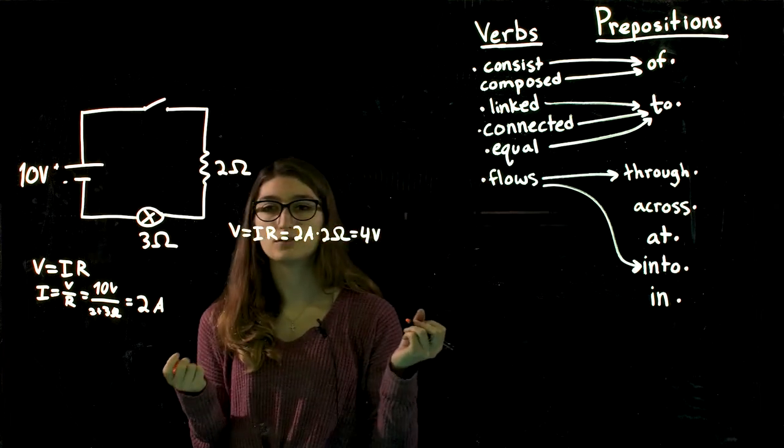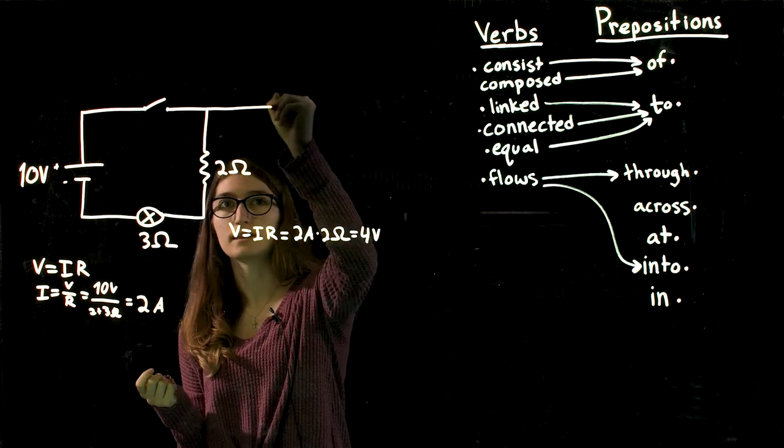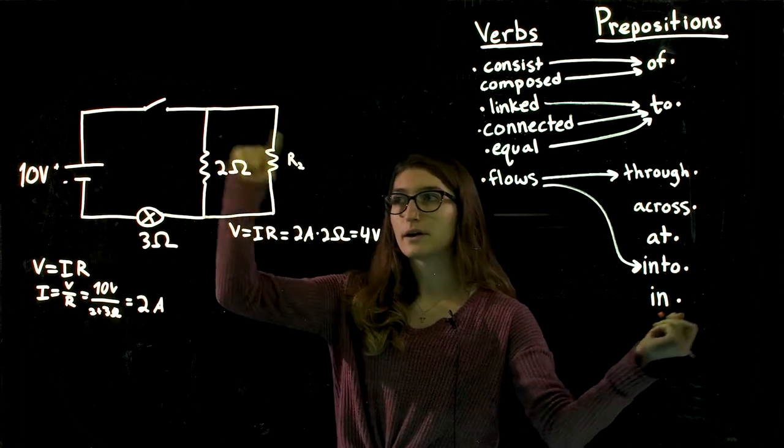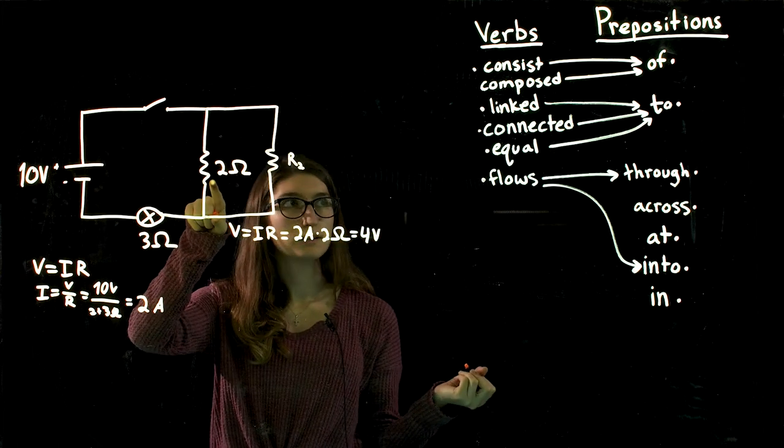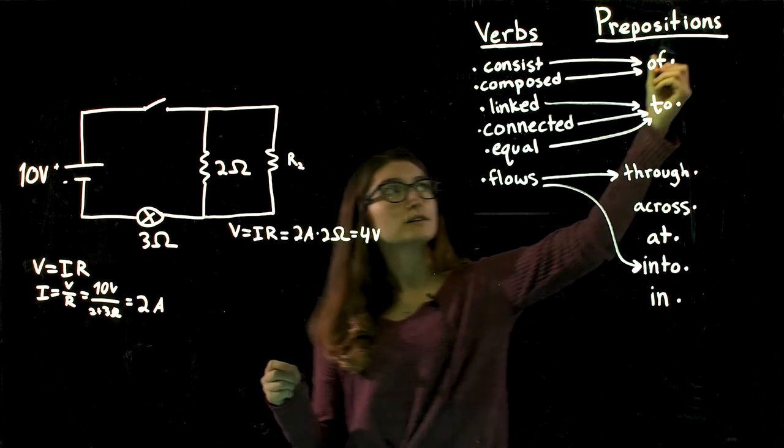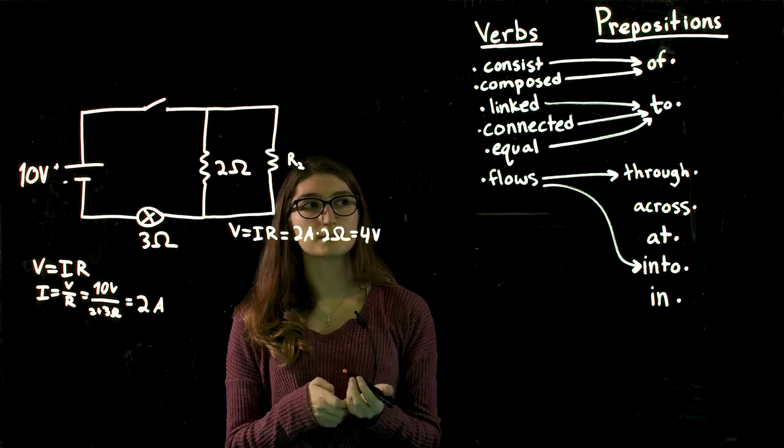If we wanted to draw another resistor like this, this resistor is then connected in parallel with this resistor. And now, our circuit is composed of 5 elements instead of 4.